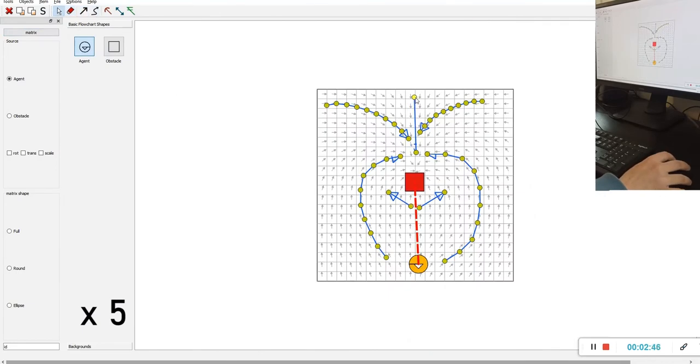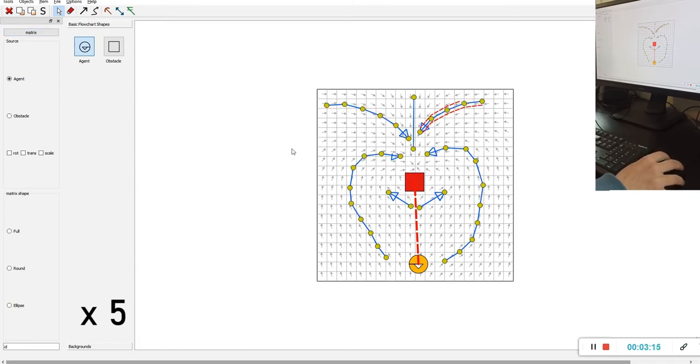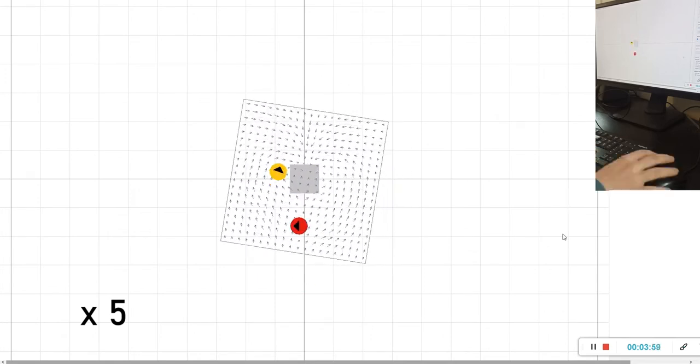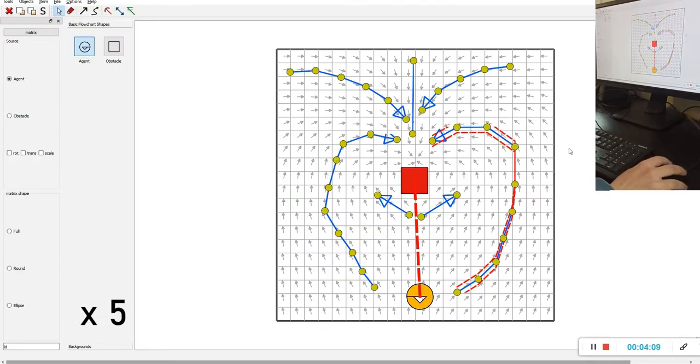This interaction field editor lets users intuitively and quickly design new types of behaviors without having to program any behavioral rules. By drawing a small amount of control vectors around the source, the red agent, the entire field is obtained by interpolation.